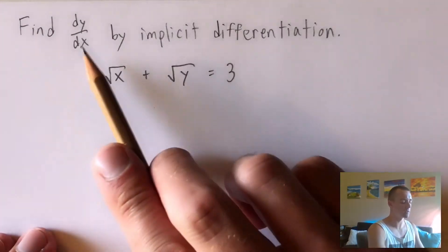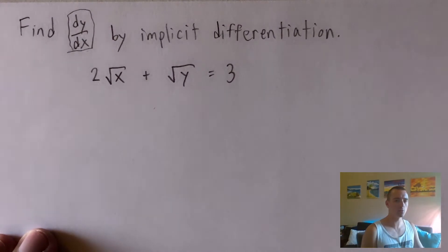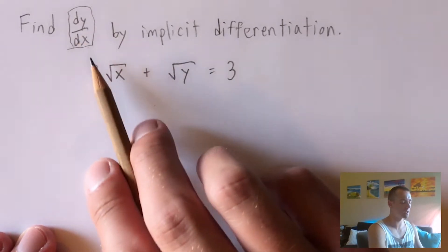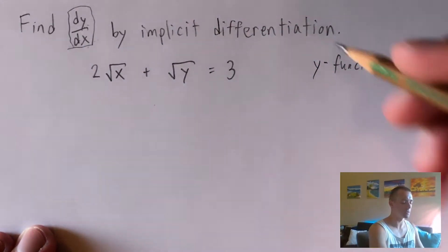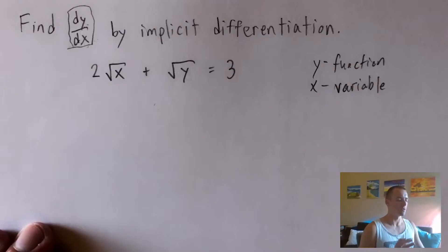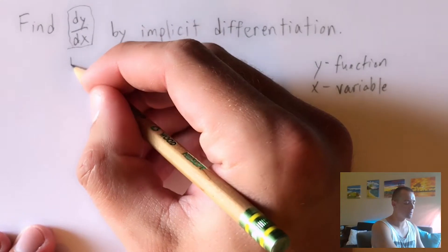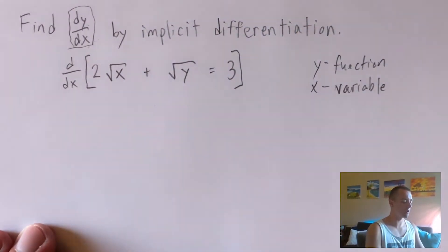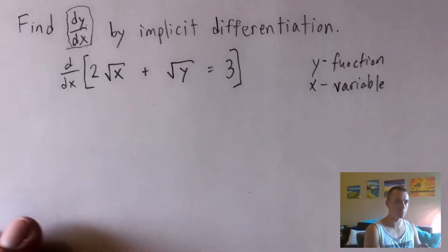In this case, based on the fact that it's telling us to find dy/dx, this actually tells us exactly which one is which. Whenever you have d-something over d-something — like dy over dx — whatever's on top is always gonna be treated as your function, and whatever's on bottom, in this case x, is always gonna be treated as your variable. So x is gonna be our variable, and y is gonna be our function.